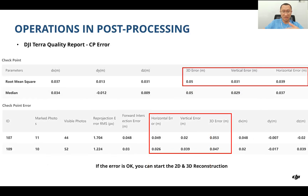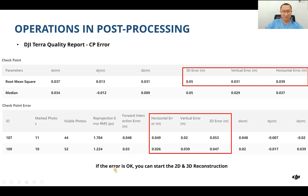For checkpoints, the report also provides the RMSE with 3D, vertical, and horizontal values for each checkpoint. If you find the error is acceptable, you can proceed with the 2D and 3D reconstruction.